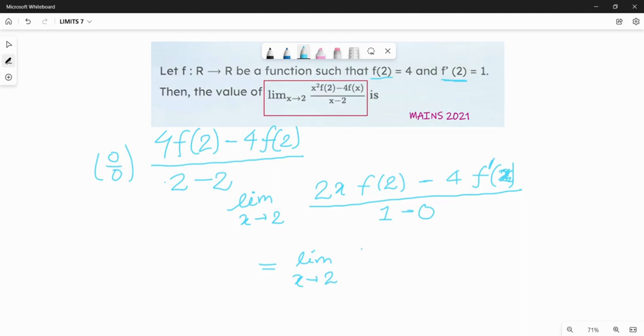Equals to limit x approaches to 2: 2x f of 2 minus 4 f dash x.